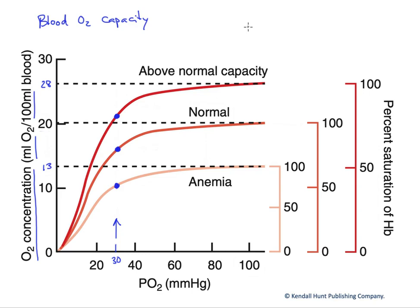In other words, hemoglobin subunit cooperativity, where interaction between the subunits gives us this sigmoid shape to its curve and this dramatic unloading at the tissue PO2s.